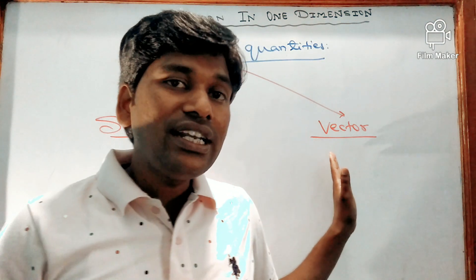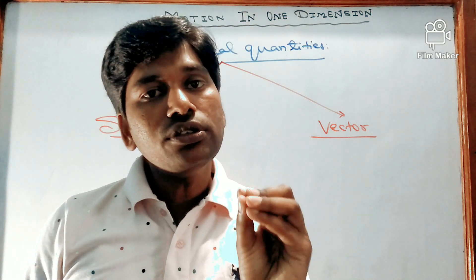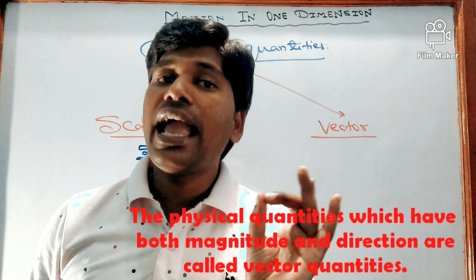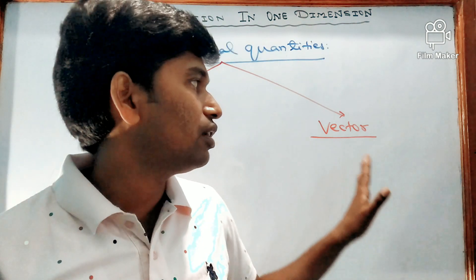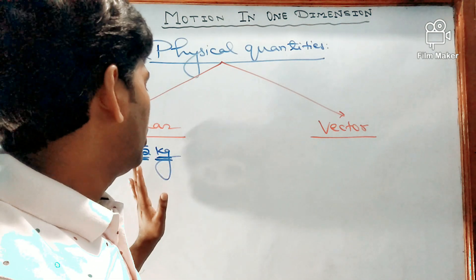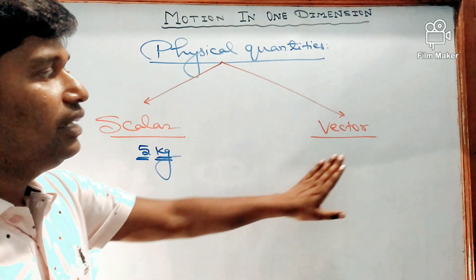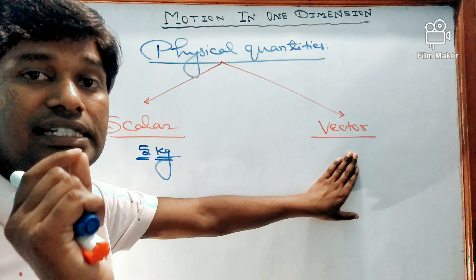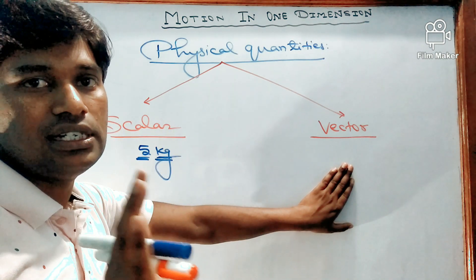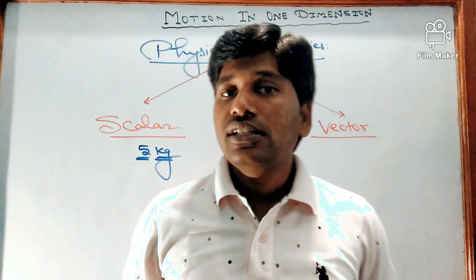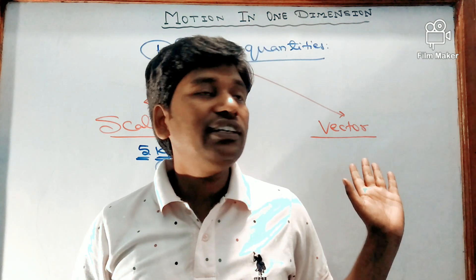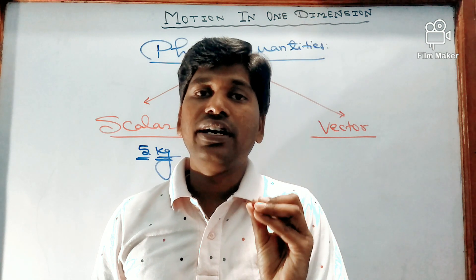Those physical quantities which have magnitude as well as direction are known as vector quantities. For example, displacement, velocity, acceleration, force, and torque. To express a vector quantity completely, three parameters are required: numerical value, unit, and direction.